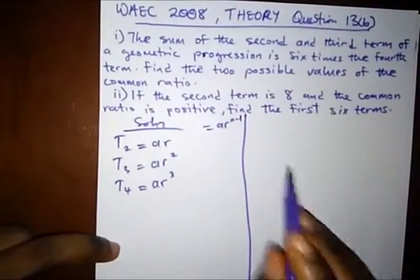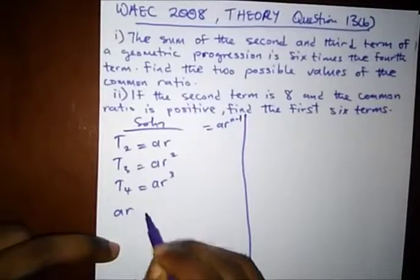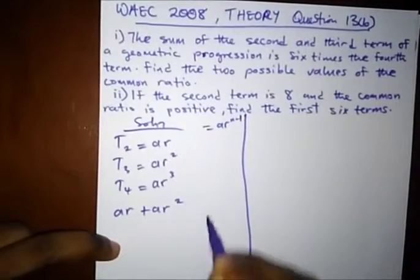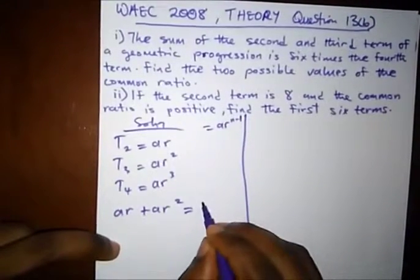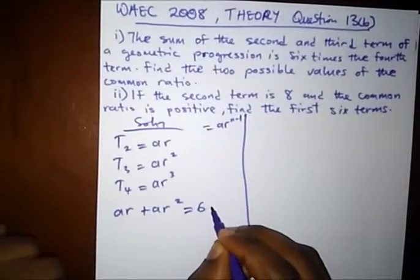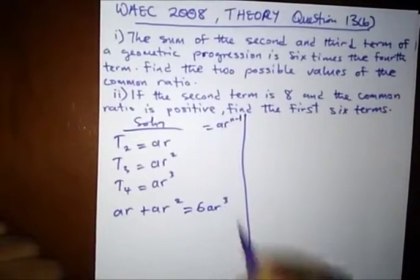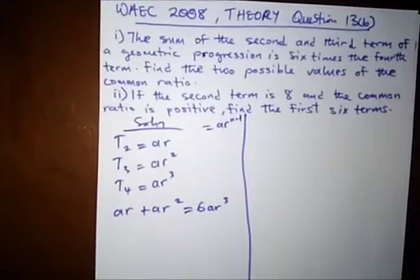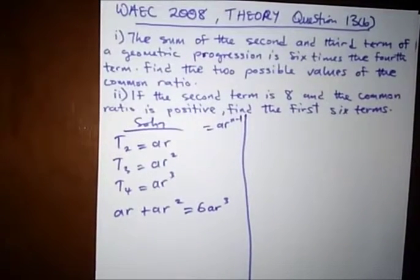So the sum of the second and third term, that is AR plus AR squared, is equal to 6 times the fourth term, AR³. So here, this is math, and this is an equation, so we'll know how to manipulate it to get the common ratio.